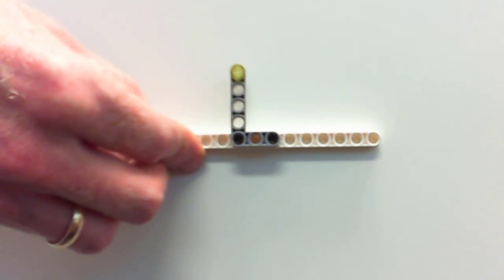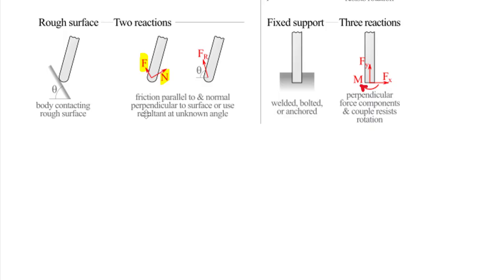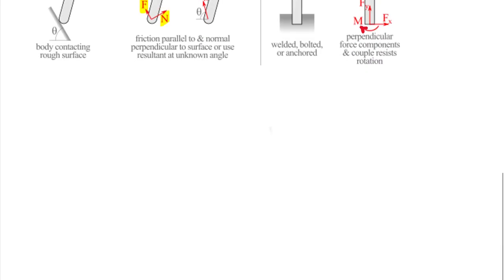You don't necessarily need to memorize all of these, but you need to understand them. You need to understand where these forces and couples are coming from, and when you have these types of supports and need to create a free body diagram, you need to accurately represent the forces and couples from each support. A two-dimensional problem can only have up to three unknowns; more than three means you've probably quantified something incorrectly.